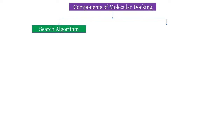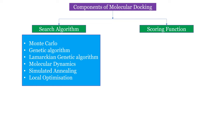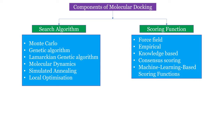Now let us see the components of molecular docking: search algorithms and scoring functions. There are many search algorithms, but the most famous ones include Monte Carlo, genetic algorithm, Lamarckian genetic algorithm, molecular dynamics, simulated annealing, and local optimization. For scoring functions, there are force field scoring functions, empirical scoring functions, knowledge-based scoring functions, consensus scoring functions, and machine learning-based scoring functions. Artificial intelligence and machine learning-based scoring functions are also upcoming but are still in a trial phase.